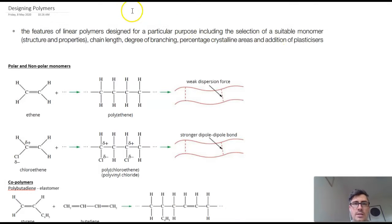Okay, in this video we're going to look at designing polymers. Part of your study design is that you can find features of linear polymers designed for a particular purpose, including the selection of monomers, chain length, degree of branching, and percentage of crystalline areas, and then finally the addition of plasticizers. So we're going to cover all of those things in this video.